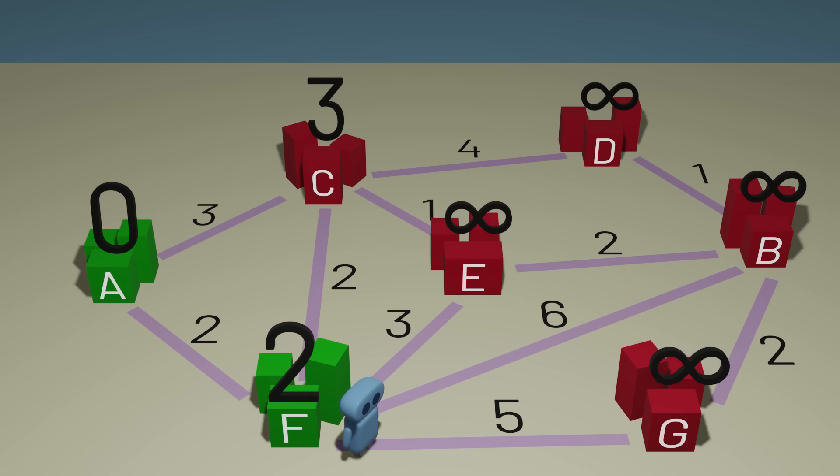And now, the two-part process of Dijkstra's algorithm repeats. We first update our estimates by looking at the towns connected to town F. It takes five minutes to get from town F to town G. So if we can get to town F in two minutes, then we can get to town G in seven minutes, the sum of those two values. Likewise, we can get to town B in eight minutes, and we can get to town E in five minutes.